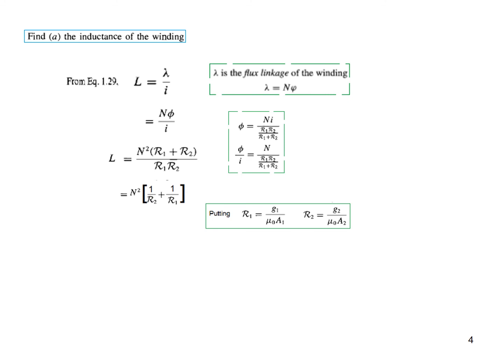Now putting R1 equal to g1 over mu_naught*A1, and this formula, we can further get this equation in terms of the air gap length, area, and mu_naught. So R1 and R2 are replaced by these two equations. And again taking the common terms, so this is the final value of inductance.